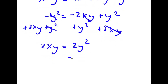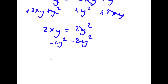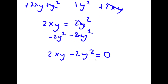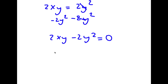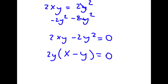Now I'm going to subtract 2y squared on both sides. These two cancel out and I get 2xy minus 2y squared is equal to zero. I can factor out 2y, so now I have 2y times (x minus y) is equal to zero.